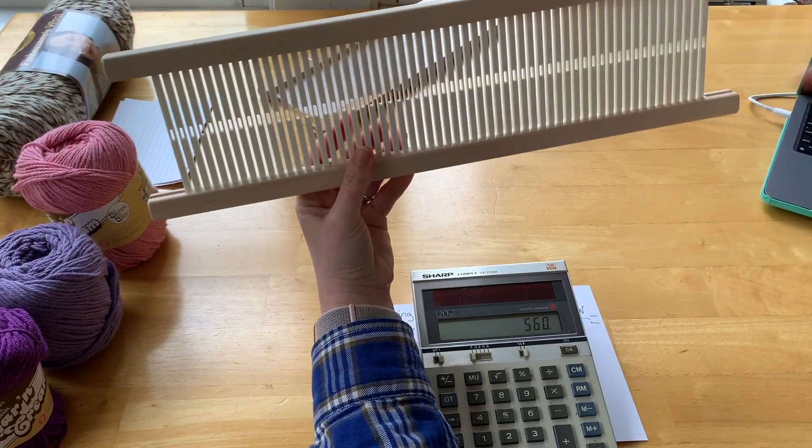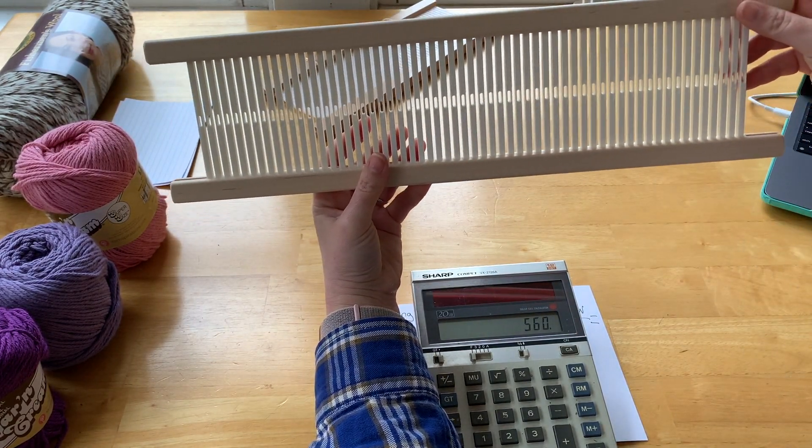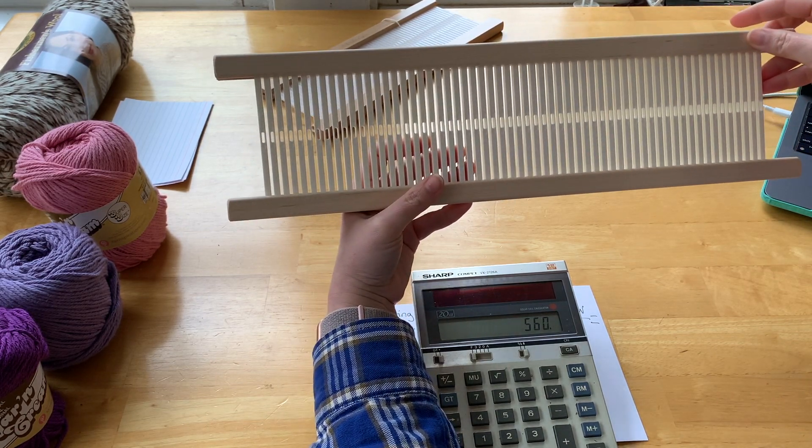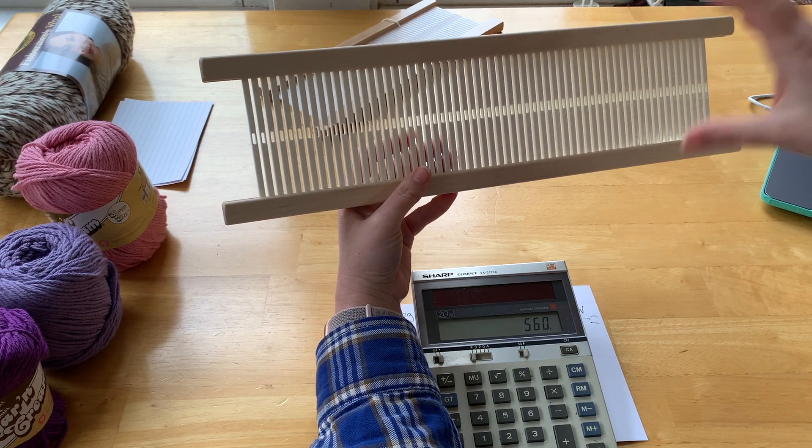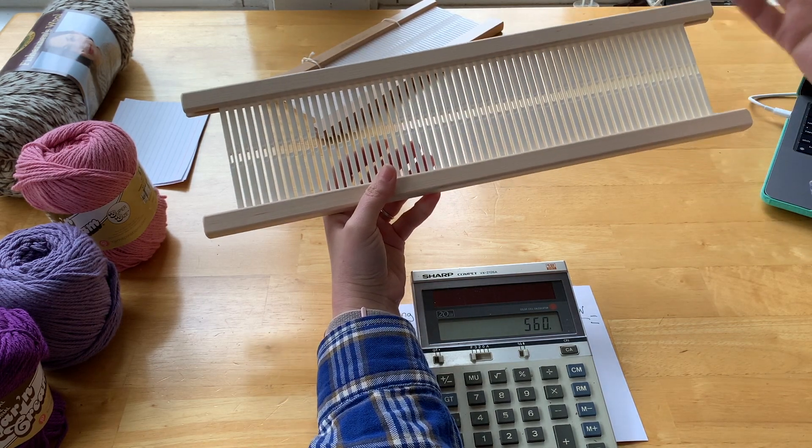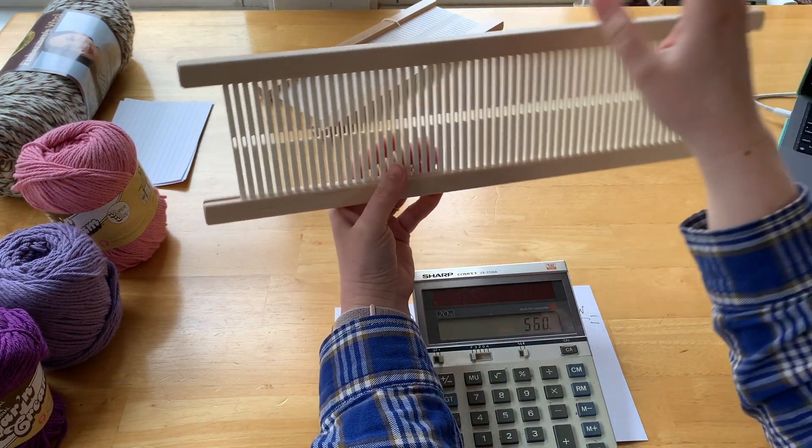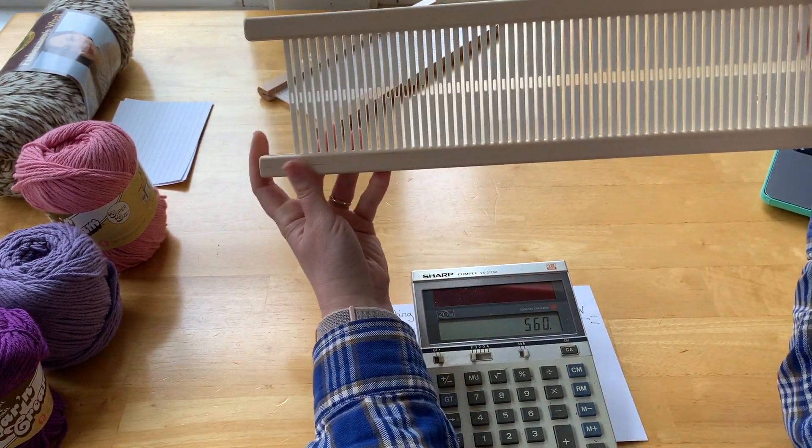So next video, I'm going to show you how to take the thread or yarn that you're going to go out and buy and warp it up on the loom, and how to slay the reed for double-width using only one of these bad boys and two rod string heddles.